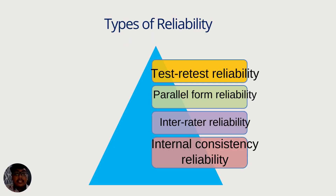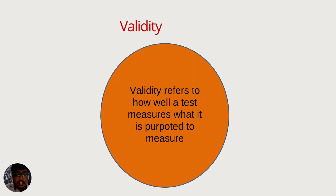The types of reliability include: test reliability, parallel form reliability, inter-rater reliability, and internal consistency reliability.